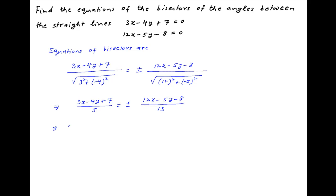Cross multiplying we get 39x minus 52y plus 91 equals plus or minus in brackets 60x minus 25y minus 40.